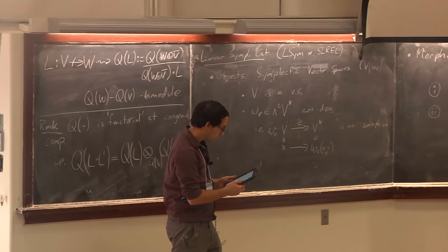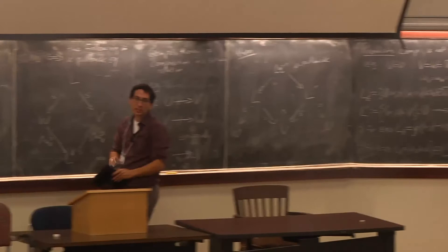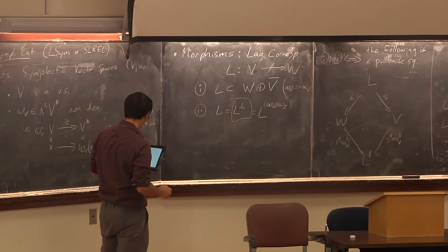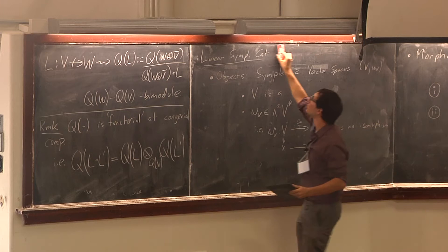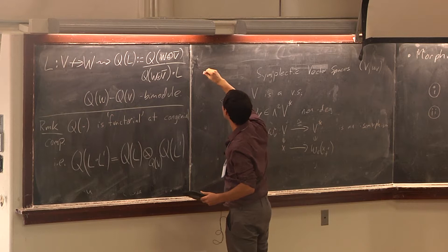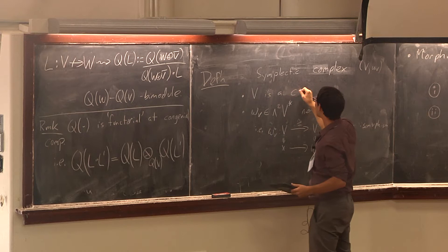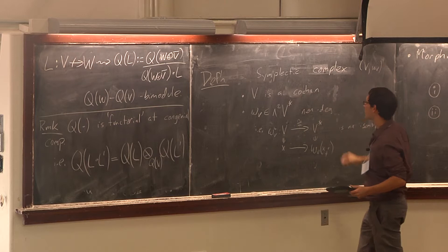More generally, why not take a derived approach to defining the symplectic category? I'm going to base that definition on the paper and ideas of Pantev, Toën, Vaquié, and Vezzosi, who started studying derived symplectic geometry. This definition of the derived linear symplectic category is just a linearization of their definitions. The first thing we want to do is replace vector spaces by complexes. A symplectic complex is a pair where V is now a cochain complex equipped with a closed degree-zero two-form, and instead of non-degeneracy on the nose, we require the map omega-flat to be a quasi-isomorphism.